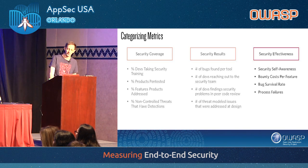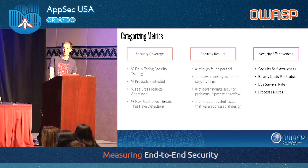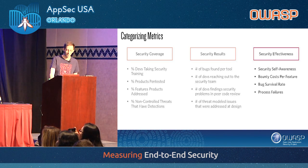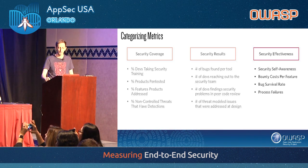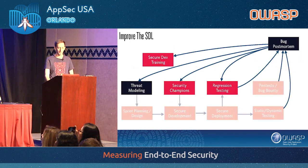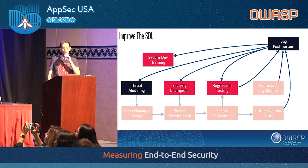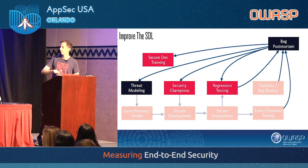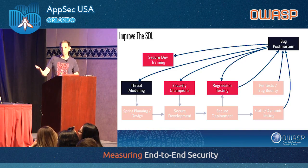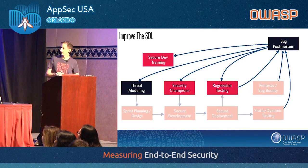This brings us to our first security effectiveness metrics: developer self-awareness, bounty cost per feature, bug survival rate — how long it's in production — and process failures. We can take that bug postmortem process and feed it back into the SDL: modify secure developer training, modify threat modeling, modify our interactions with security champions using checklists of what's going wrong, adjust the top things we ask about during meetings. Any time there's a bug in production, we modify our regression testing as well.